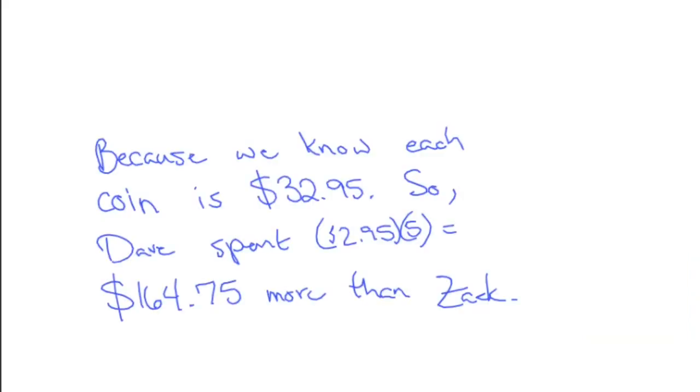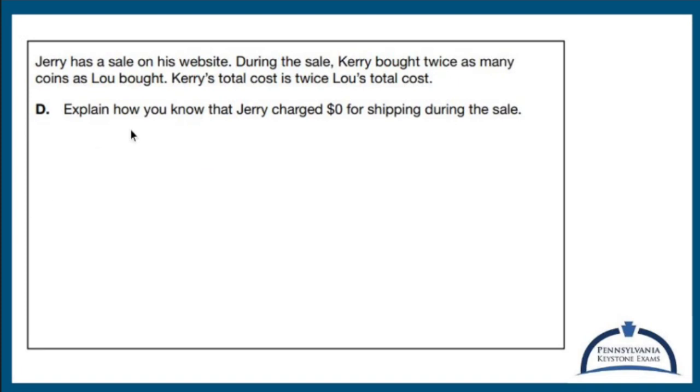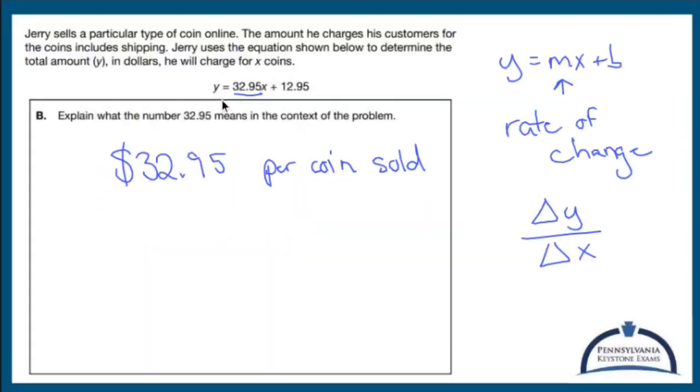If we go back to the original equation, the original equation was adding $12.95. That $12.95 is shipping. So you cannot,